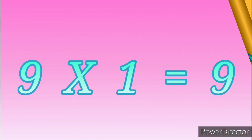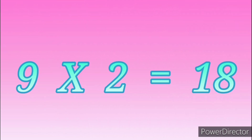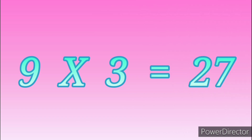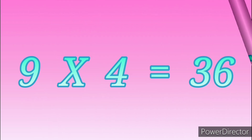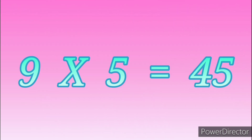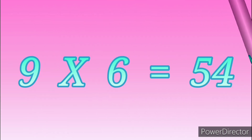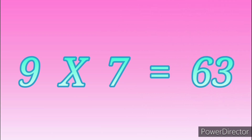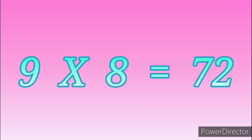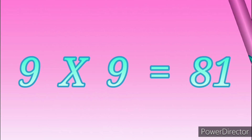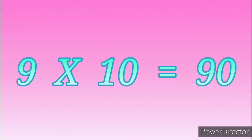Table of Nine. Nine ones are nine. Nine twos are eighteen. Nine twos are eighteen. Nine threes are twenty-seven. Nine threes are twenty-seven. Nine fours are thirty-six. Nine fours are thirty-six. Nine fives are forty-five. Nine sixes are fifty-four. Nine sixes are fifty-four. Nine sevens are sixty-three. Nine sevens are sixty-three. Nine eights are seventy-two. Nine eights are seventy-two. Nine nines are eighty-one. Nine nines are eighty-one. Nine tens are ninety.